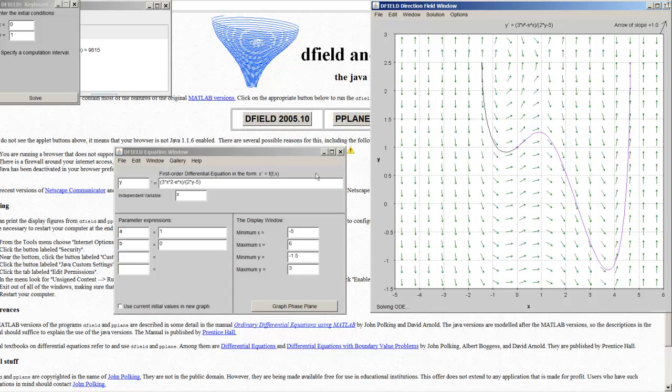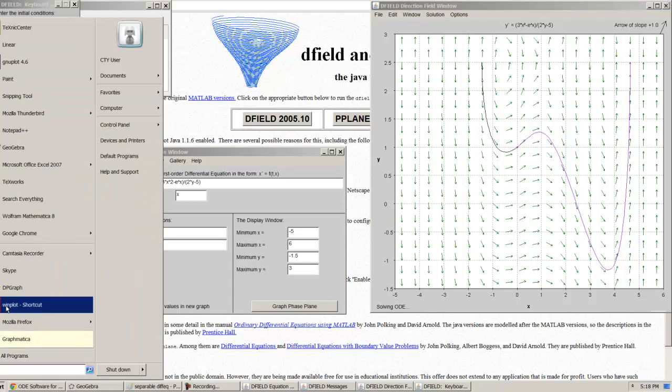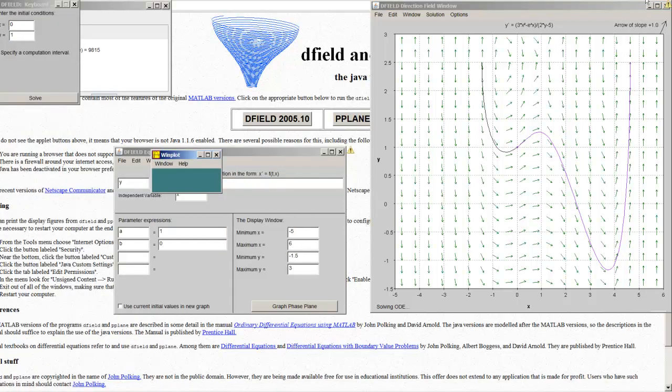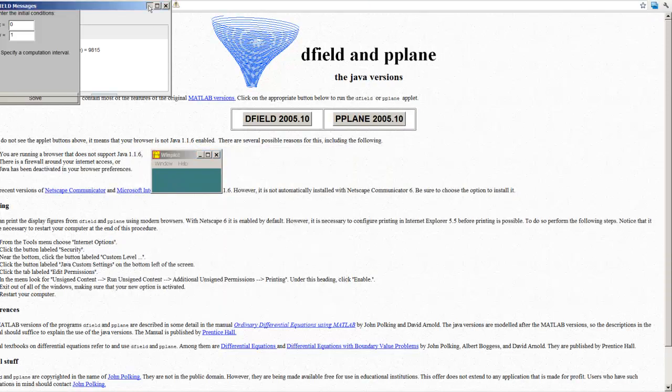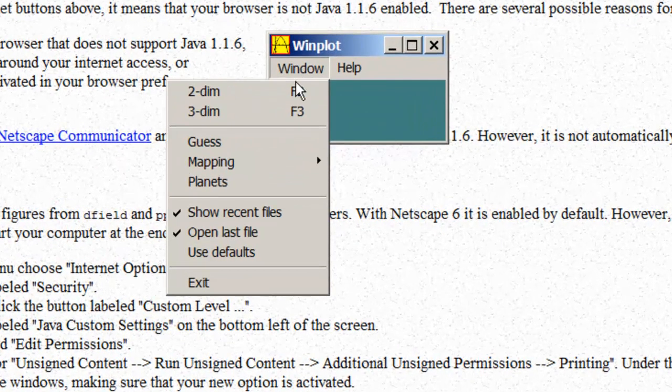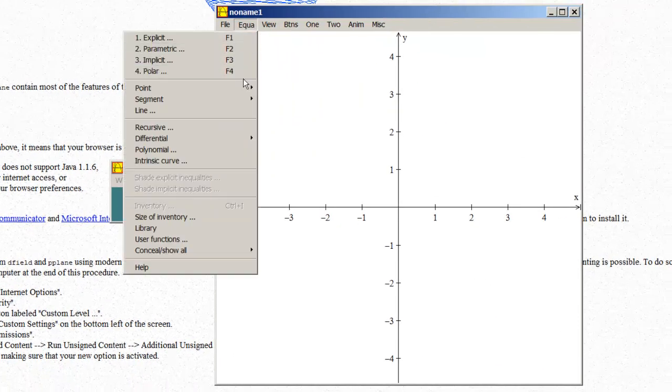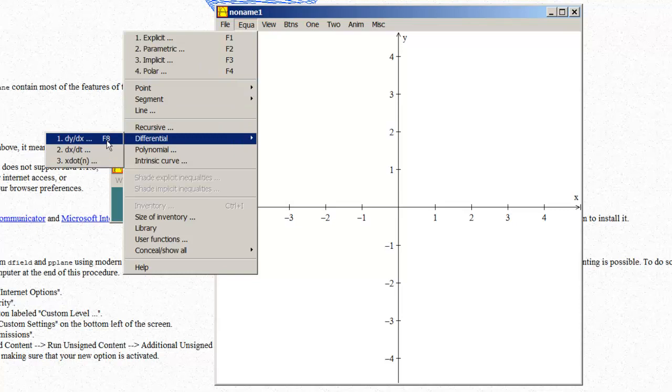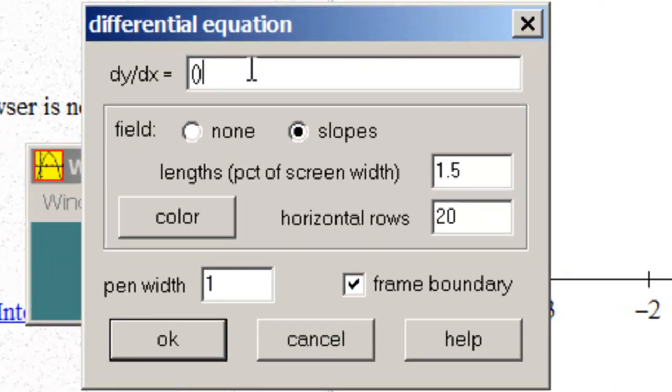There's another really nice program called WinPlot. I'll show you that in a moment. And with WinPlot, what we can do with WinPlot, window, two-dimensional, equation, differential, dy dx. And I can input the same thing. Input the same differential equation. Only this time, I'm going to go A times X squared minus E to the X and B times Y minus C. And then I'll click OK.